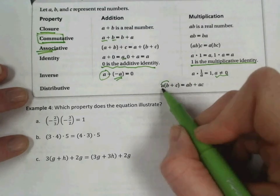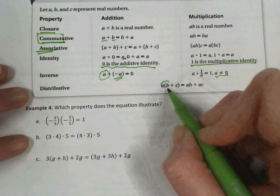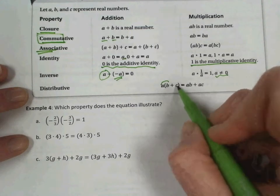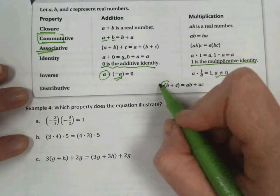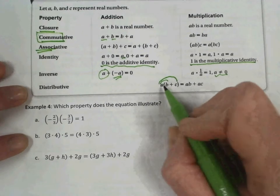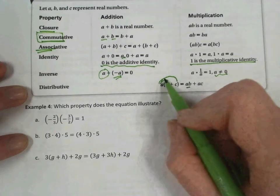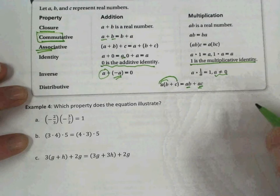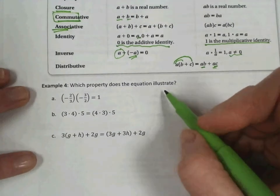And lastly, the distributive property. And the distributive property is when we have a value outside of parentheses with an operation happening, addition or subtraction, within the parentheses, we distribute the value outside, so a times b plus c is ab, and a times c is ac.